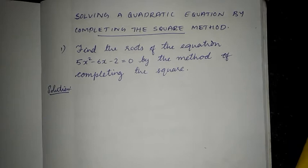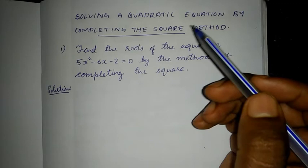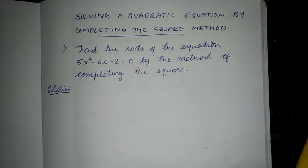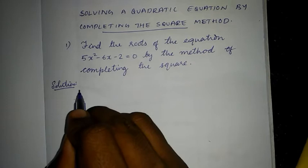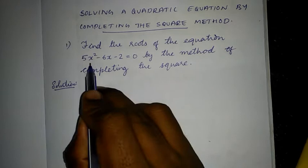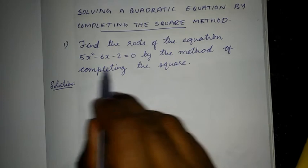Dear students, here is a question before you: how to find the solution of a quadratic equation by completing the square method. We have studied different types of methods; here is one of them which we call the completing the square method. So listen to this very carefully. Here there is a quadratic equation given, and we have to find its solution using the method of completing the square.